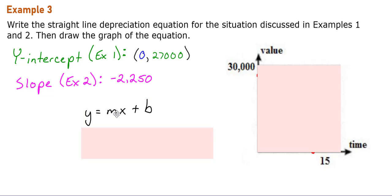We know that m is our slope, so m = -2,250, and our b-value is our y-intercept of 27,000. So our final equation is y = -2,250x + 27,000. That's our straight-line depreciation equation.